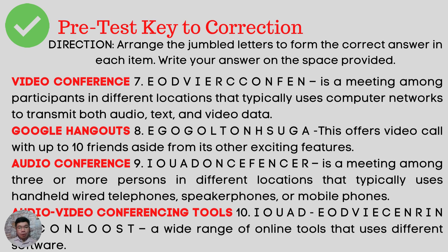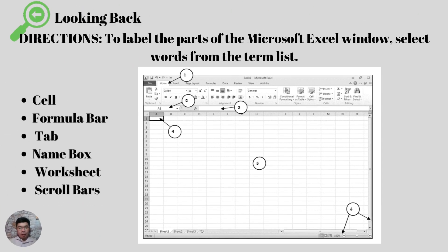So what's your score? Please comment down below. Let us have a quick review of our last lesson. The direction is to label the parts of the Microsoft Excel window by selecting words from the term list. This will give you a big picture of the environment of Microsoft Excel.